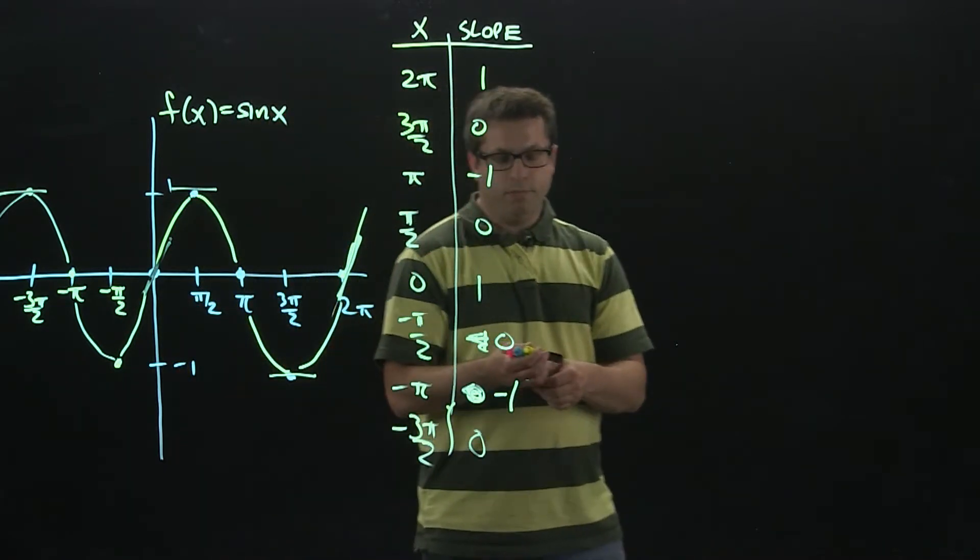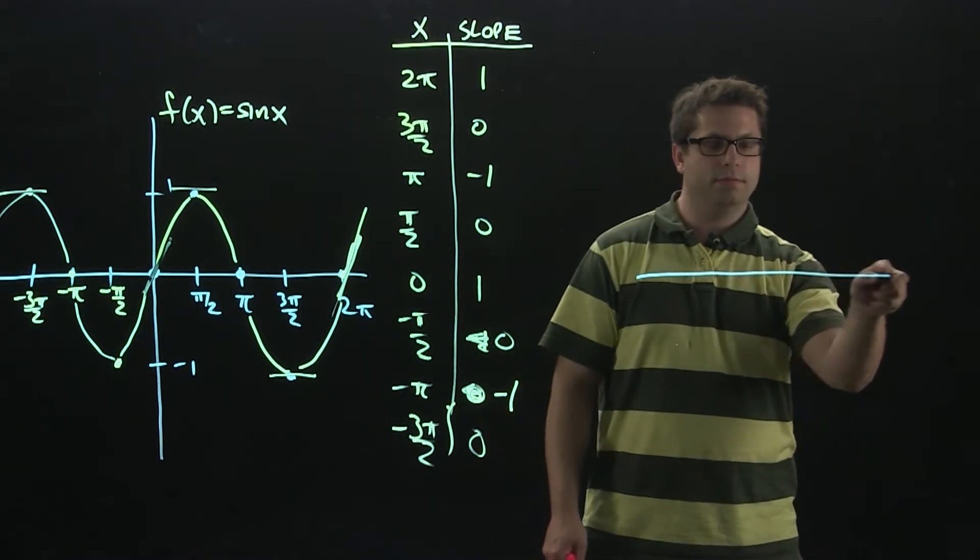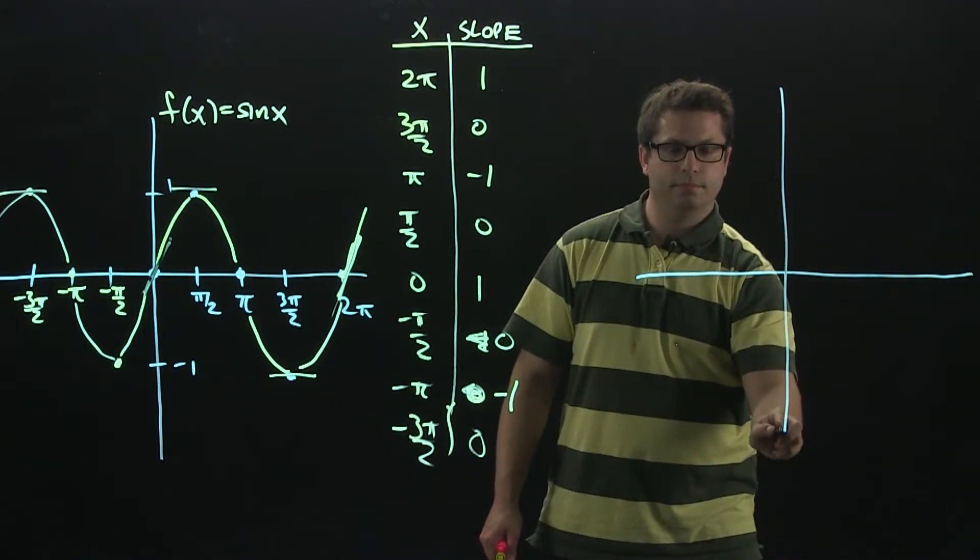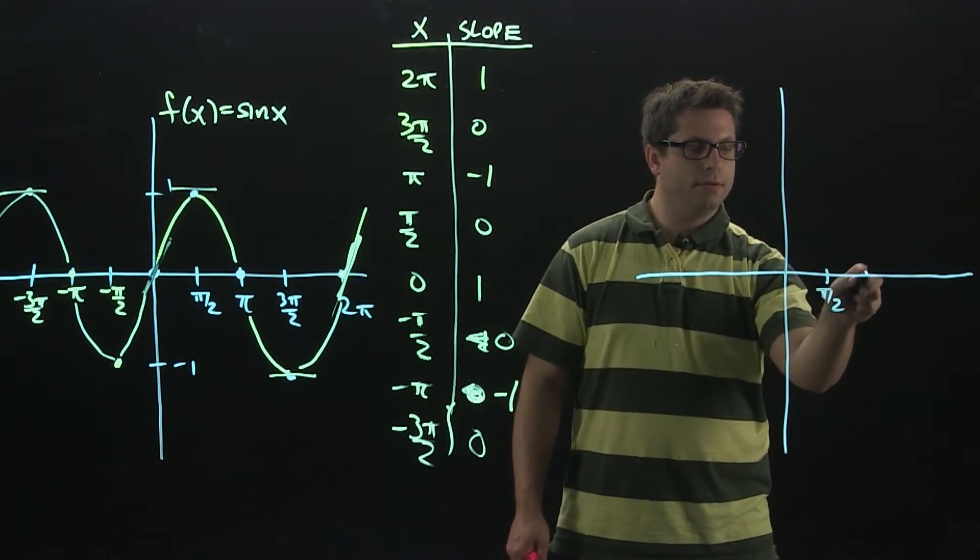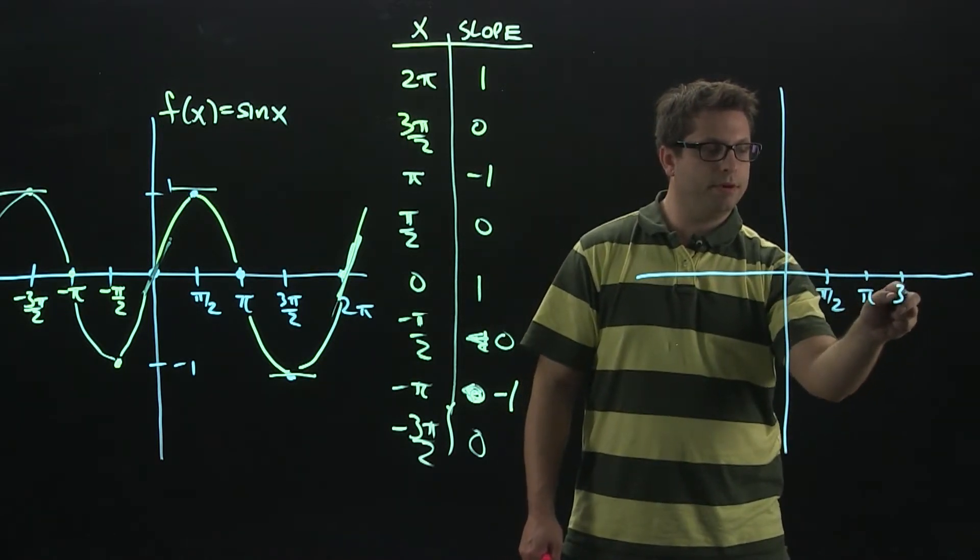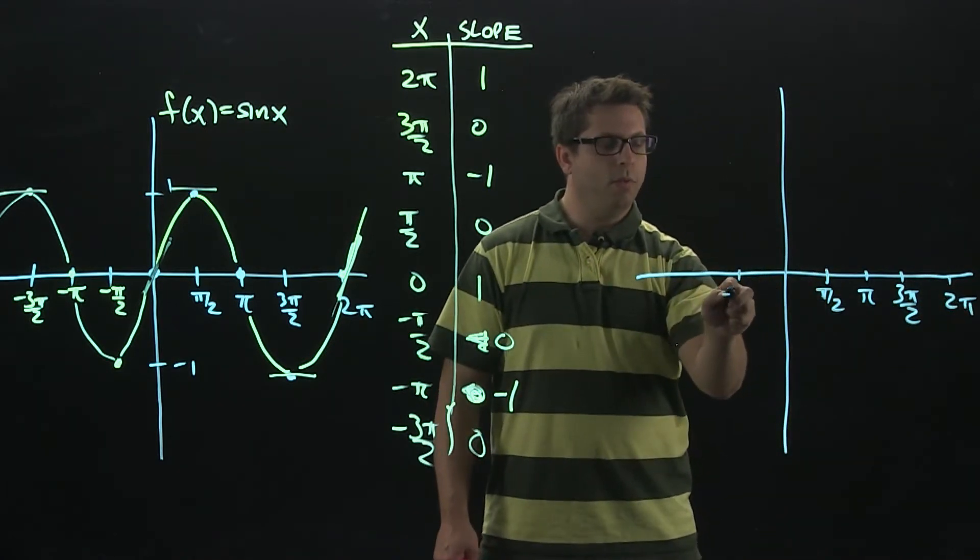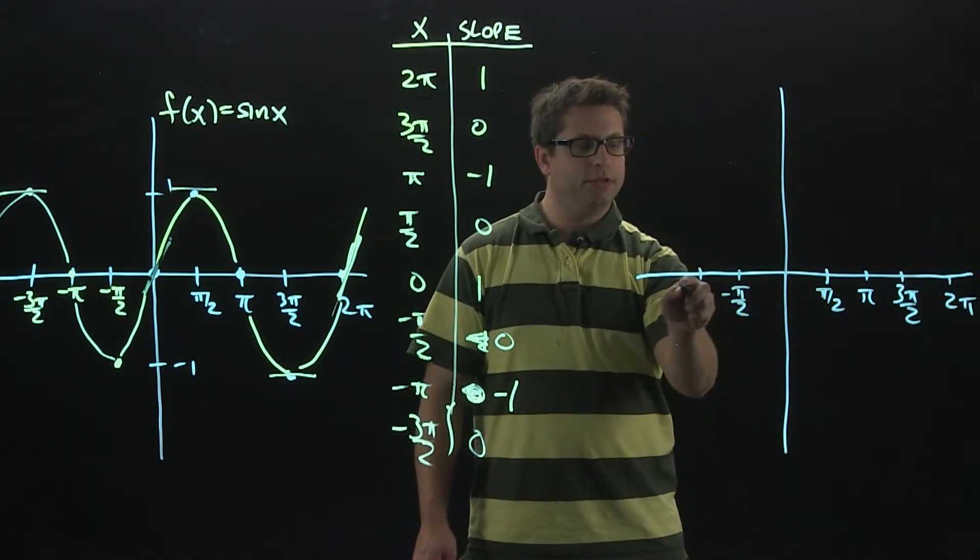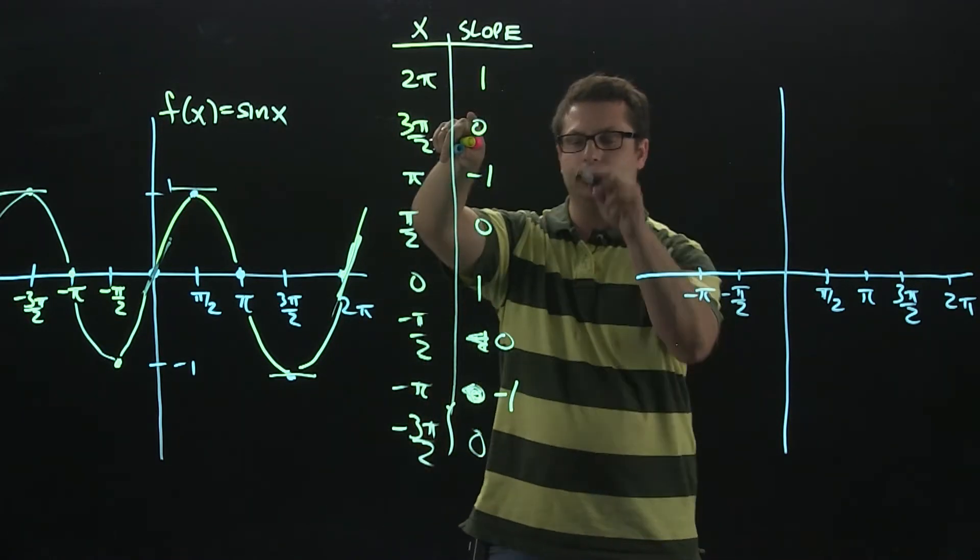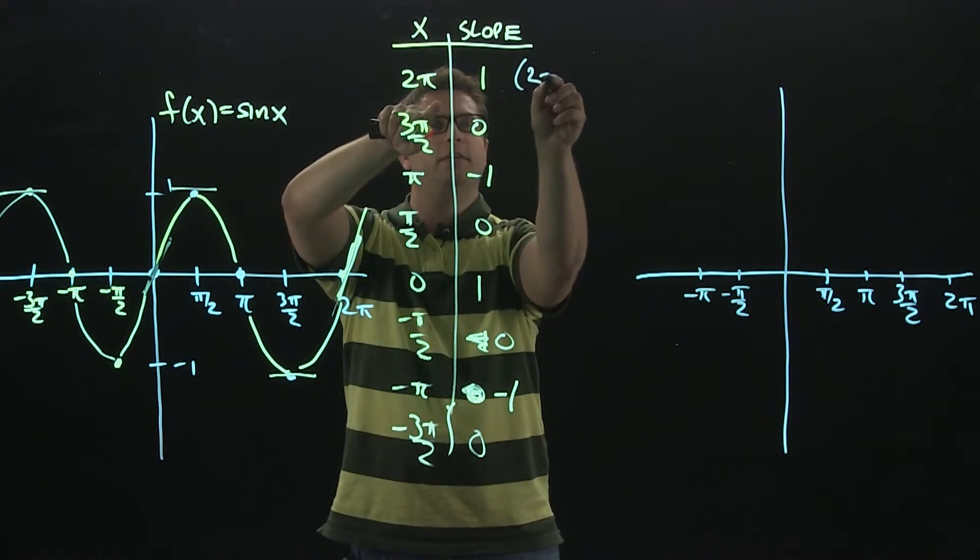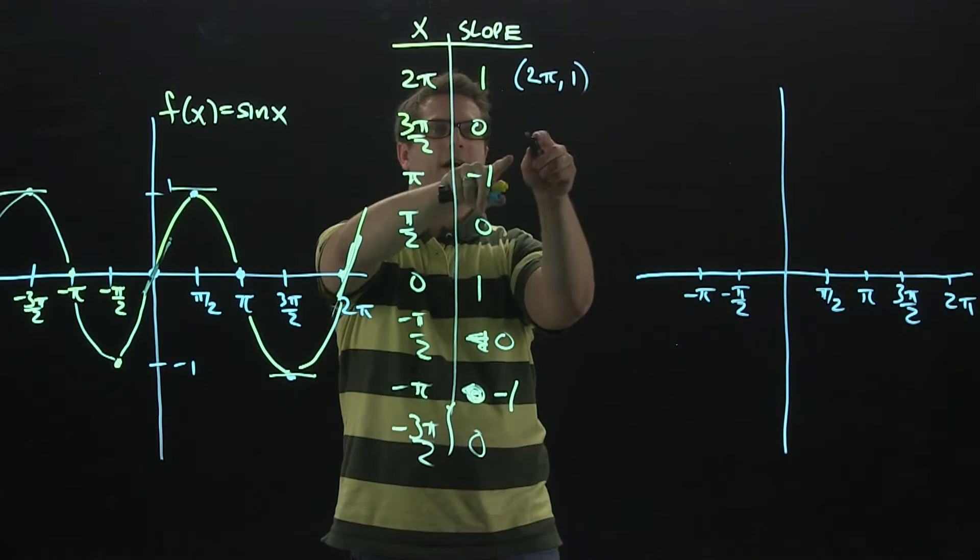Pi over 2, pi, 3 pi over 2, 2 pi. The y values on the derivative are going to be the same as the slopes on the original function. So these points right here, like 2 pi, this is going to be the point on the derivative. So 2 pi, comma, 1.